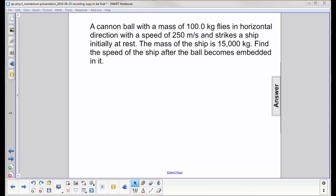A cannonball with a mass of 100 kilograms flies in a horizontal direction with a speed of 250 meters per second and strikes a ship initially at rest. The mass of the ship is 15,000 kilograms. Find the speed of the ship after the ball becomes embedded in it.